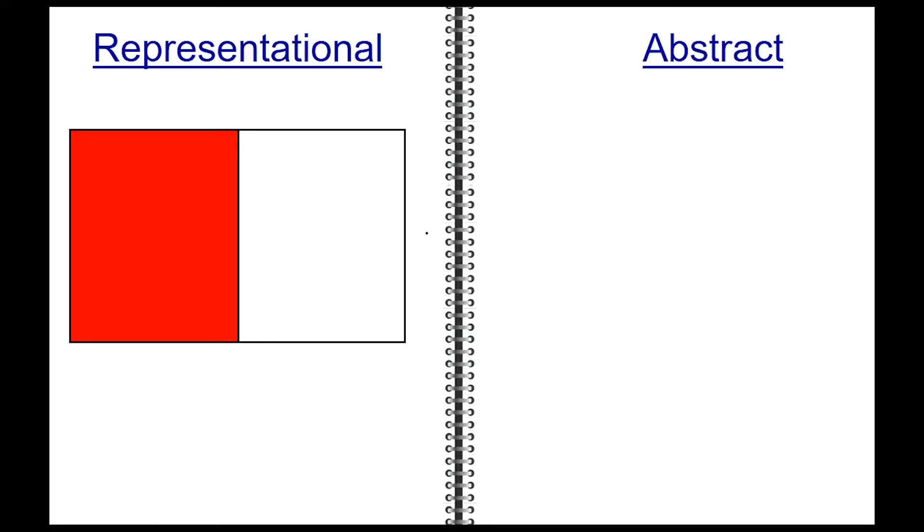A rectangle with 1 half shaded in red. The abstract of this fraction is 1 over 2. Let's add another half by shading it in red. So adding another half in the abstract gives you 1, which is also the same that you can see in this visual.